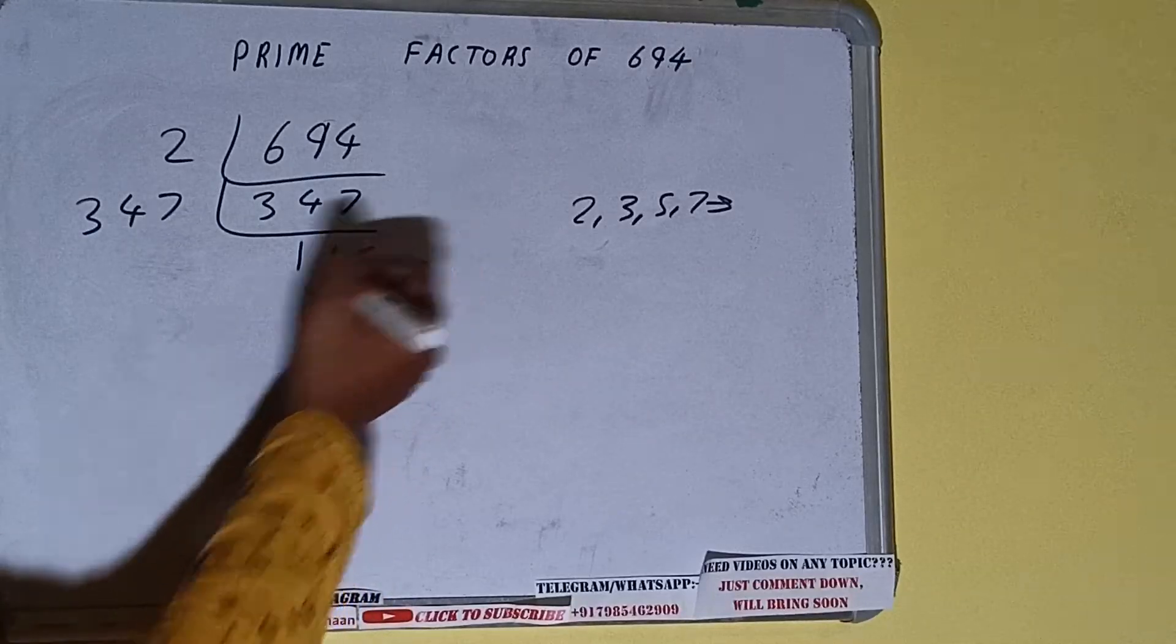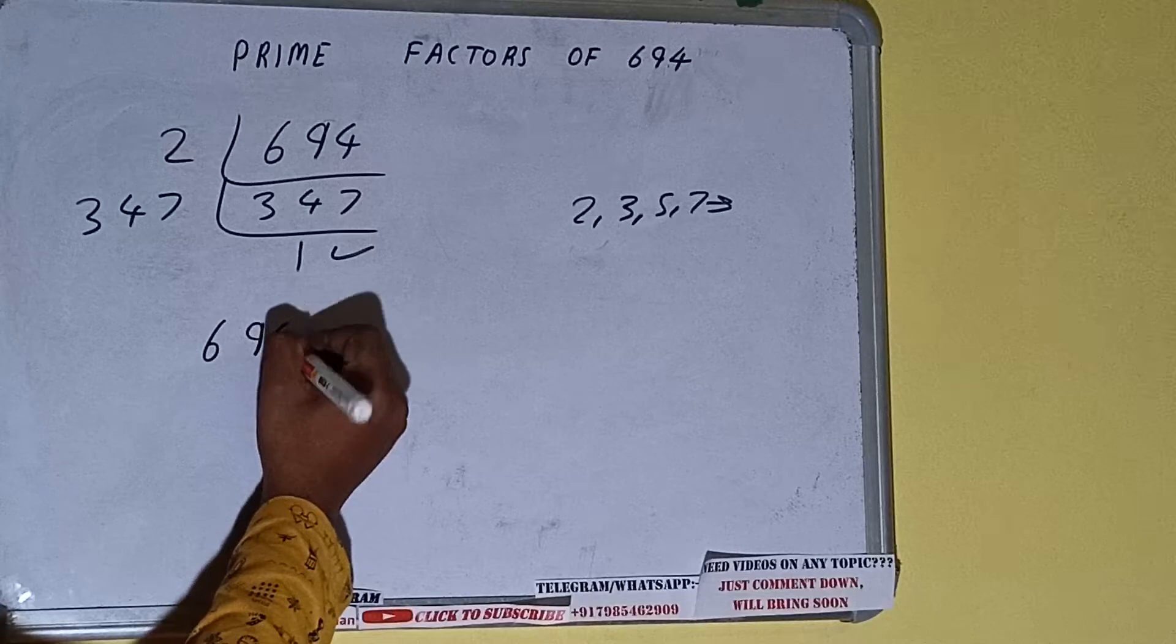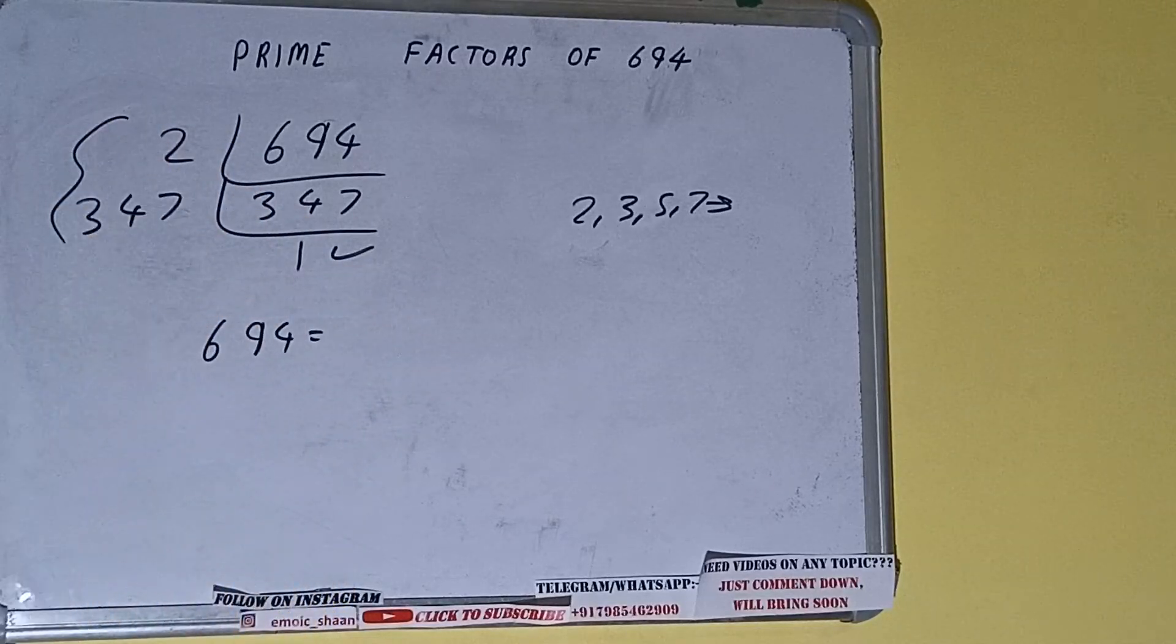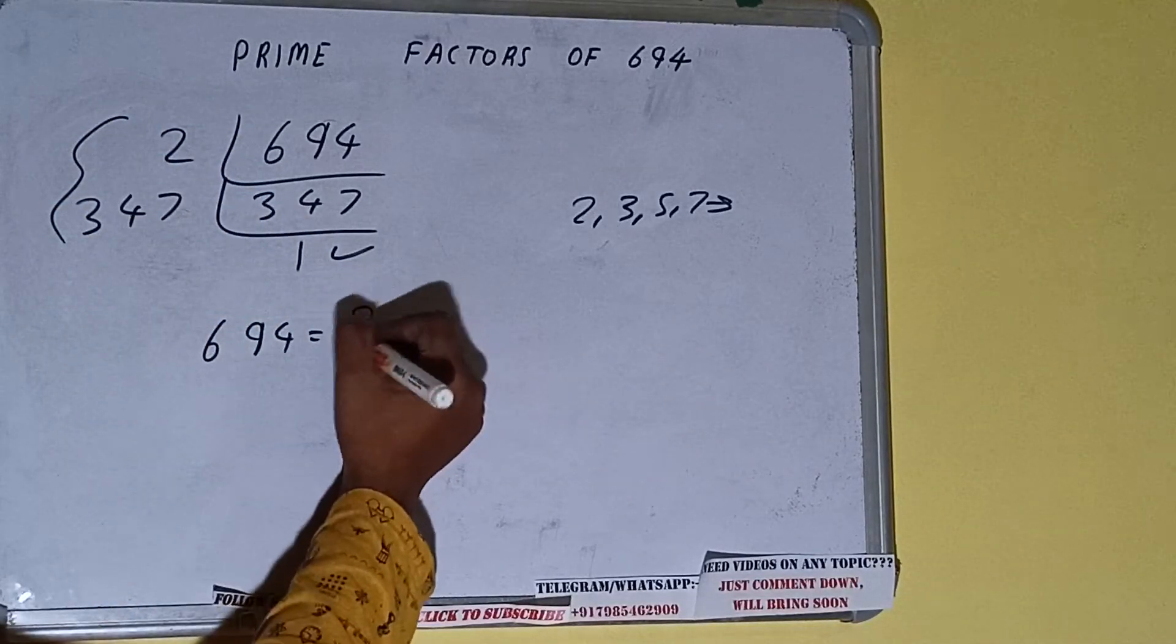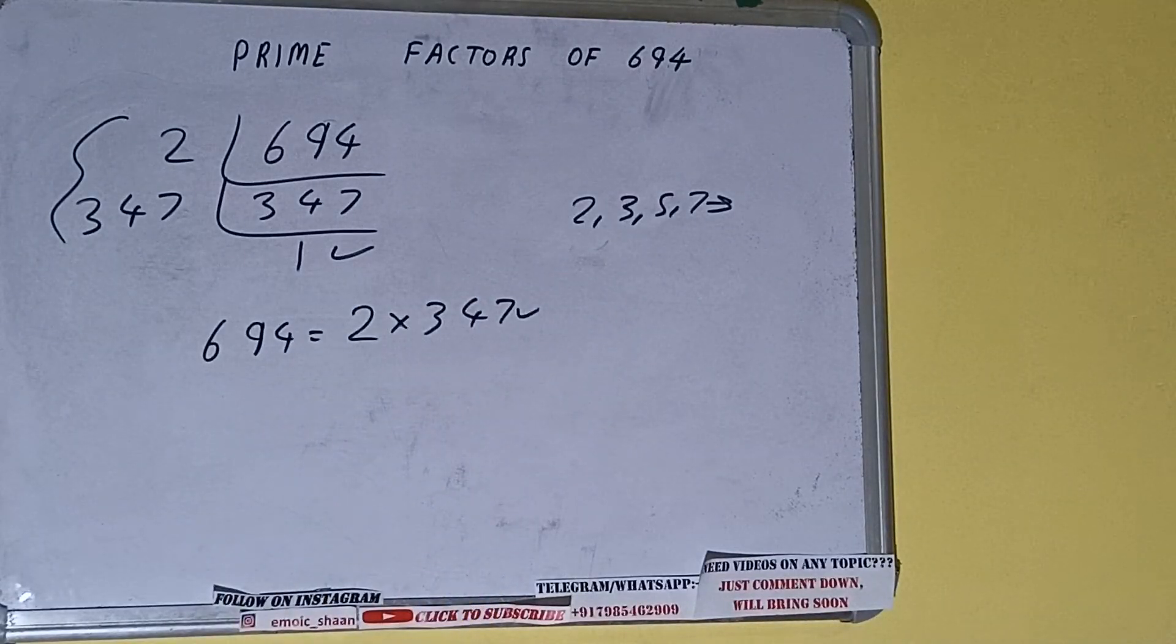Once we get 1, we need to stop and do one last thing. That is, prime factors of 694 equals multiply whatever we have on the left hand side: 2 times 347. That will be the answer. So this is all about prime factors of 694.